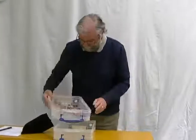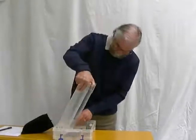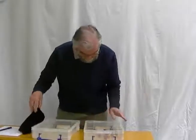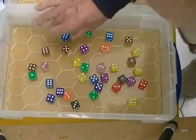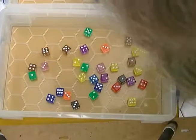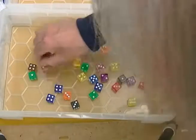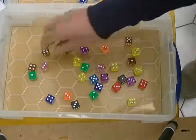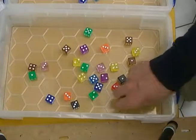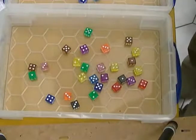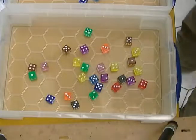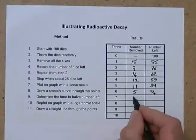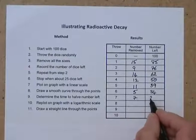And again. Now we've got one, two, three, four, five, six, seven. Seven — and that's it. Seven dice taken away that time, which leaves us twenty-seven.